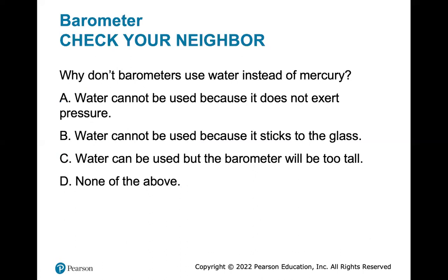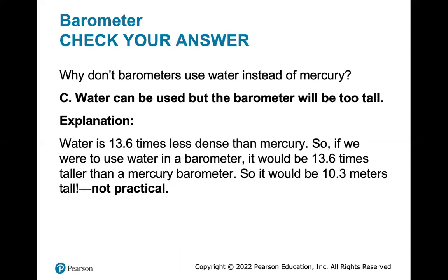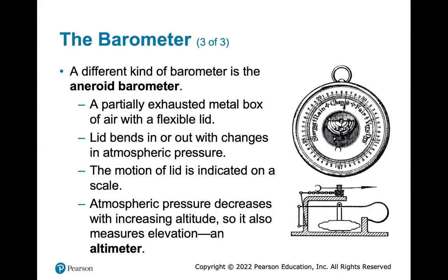Why don't barometers use water instead of mercury? The answer is that water can be used, but the barometer would be too tall. Water is 13.6 times less dense than mercury, so a water barometer would be 13.6 times taller than a mercury barometer — that's 10.3 meters tall — which is completely impractical.